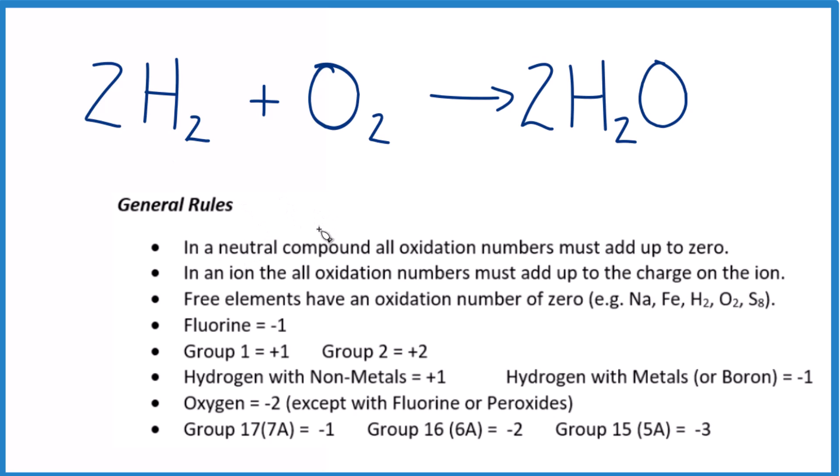In order to figure out whether we have a redox reaction, we need to find the oxidation numbers for each element. Let's start with H2. We have something called a free element here - that's when we have just one type of atom.